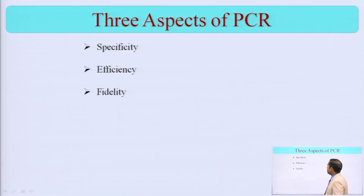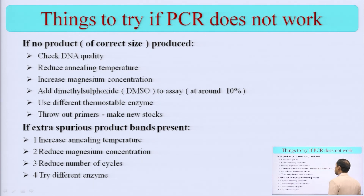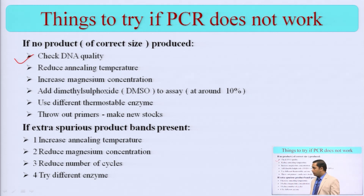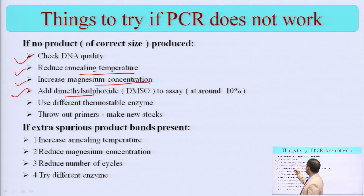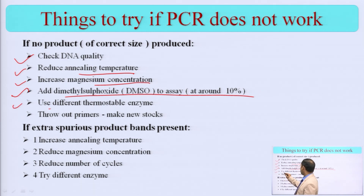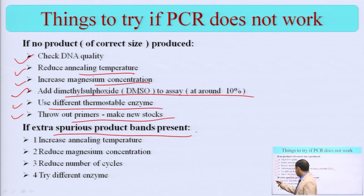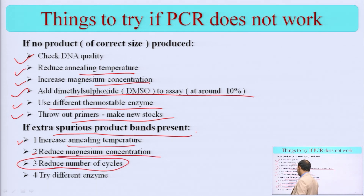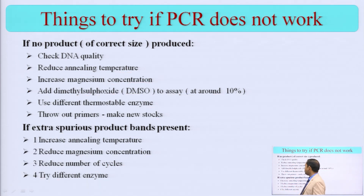Here you can see the entire instrumentation. There are three aspects of PCR: specificity, efficiency, and fidelity. If PCR does not work, in many cases you will observe that you have failed in your activities. In those cases, check the DNA quality, reduce the annealing temperature, increase the magnesium concentration, add DMSO (dimethyl sulfoxide), use different types of thermostable enzyme, or replace the primer. If extra spurious products are present, increase the annealing temperature, reduce the magnesium concentration, reduce the number of cycles, or try a different enzyme.